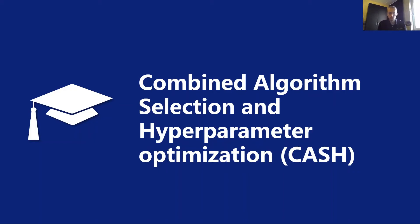Hi everyone. In the previous video we have seen that human experts often have to make many choices within the machine learning deployment process. For example, we have to decide what data pre-processing steps to use, what learning algorithm to use, as well as what hyperparameter values we want to use for that learning algorithm.